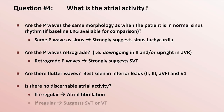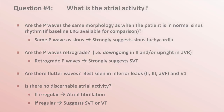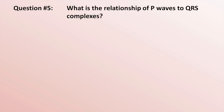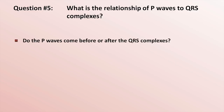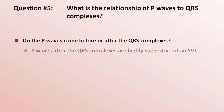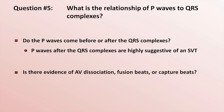No discernible atrial activity with a regular rhythm suggests either SVT or VT. Question 5: What is the relationship of P-waves to QRS complexes? For example, do the P-waves come before or after the QRS? If the P-waves come after, it is highly suggestive of an SVT. Also, is there evidence of AV dissociation, fusion beats, or capture beats? Any of the above means the rhythm is almost certainly VT.